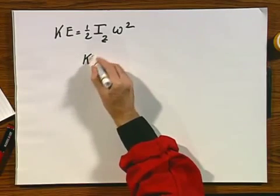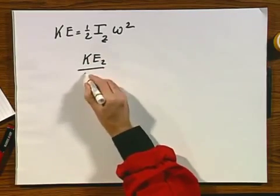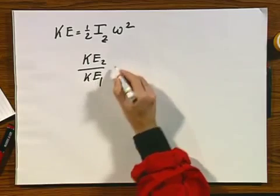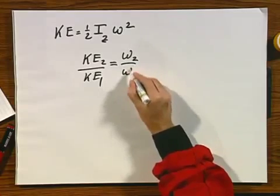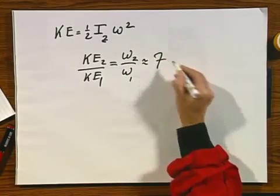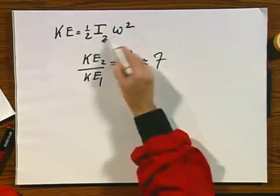So if you take the kinetic energy in situation 2, when the arms are in, divided by the situation when the arms are not in, you will find immediately omega 2 divided by omega 1, which is approximately 7 in our special case, because I omega is constant.